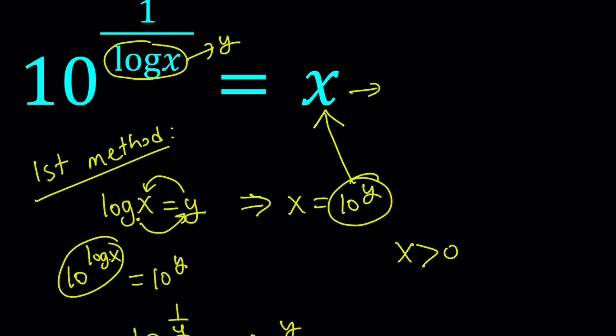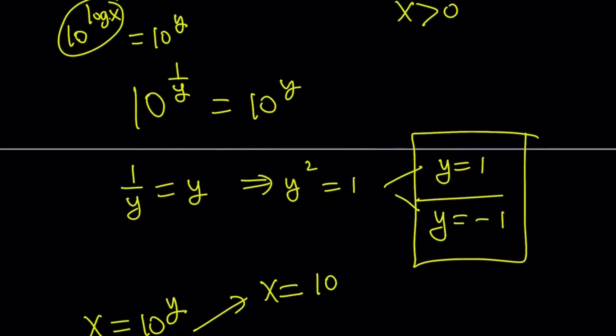For example if you plug in 10, 10 to the power 1 over log 10, log 10 is 1, 1 over 1 is 1, 10 to the power 1 is 10 and x is equal to 10. Makes sense. And then 1 over 10 should give you the same idea. Looks like both solutions are working.